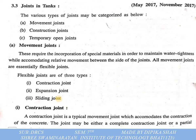Our new topic is joints in tanks. There are various types of joints, categorized as below: first is the movement joint, second is the construction joint, and third is the temporary open joint.